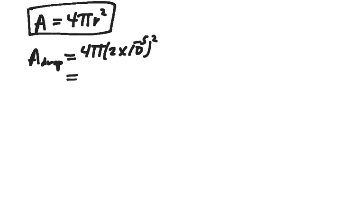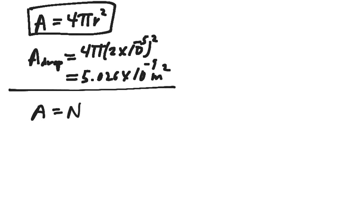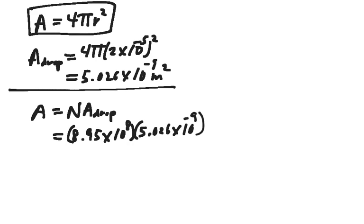That's going to be equal to 5.026 times 10 to the minus 9 square meters. Our total area will be equal to the number of droplets we have times the area of a droplet. So this is going to be 8.95 times 10 to the 8 number of droplets times the area of one droplet 5.026 times 10 to the minus 9, and this will give us our area in square meters.